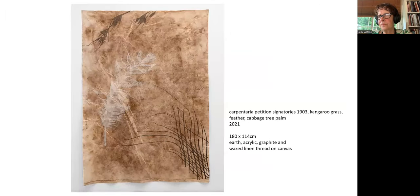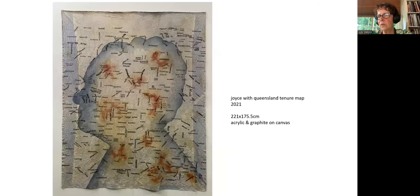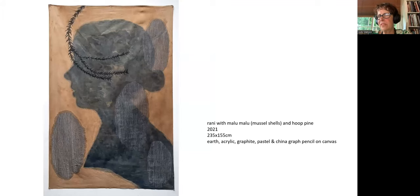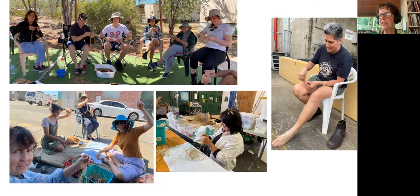This is for a recent show opening in Canberra. This is from a petition by non-Indigenous people calling for Aboriginal people all around where my grandmother and family lived to not be given any money for working, and to be removed from the stations — the Carpentaria petition. This is my mother Joyce with a territory map. And my daughter Rani with the Malu Malu or freshwater mussel shells. Some of my family are up there — my mum second from the right, my son in the white shirt, my cousin on the left — and others down the bottom for a project that's coming up in Canberra. We've been making string and working on sewing muslin.